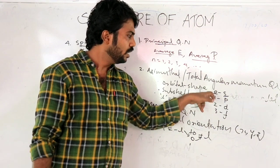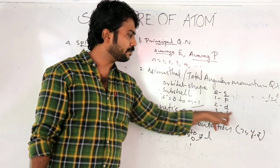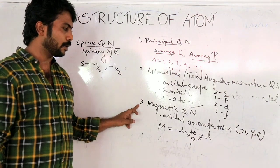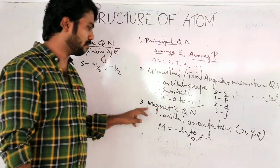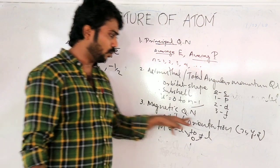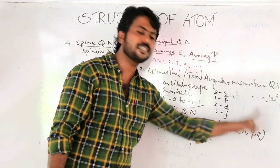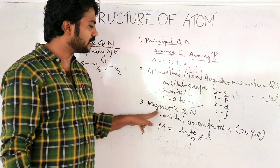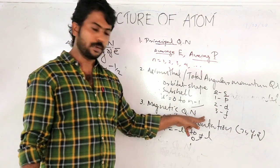The Azimuthal number represents total angular momentum and orbital shape. Its values are 0, 1, 2, 3 — corresponding to s, p, d, f orbitals respectively. The Magnetic quantum number represents orbital orientation through the X, Y, Z axes.